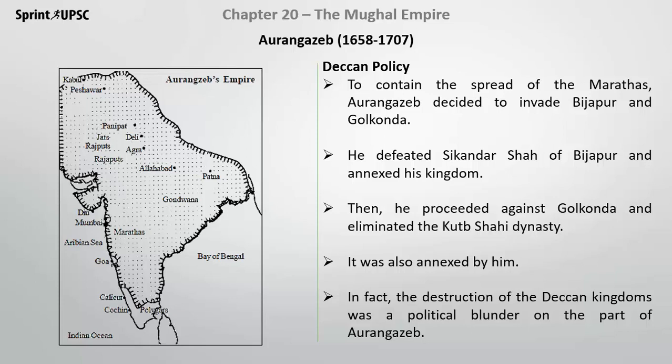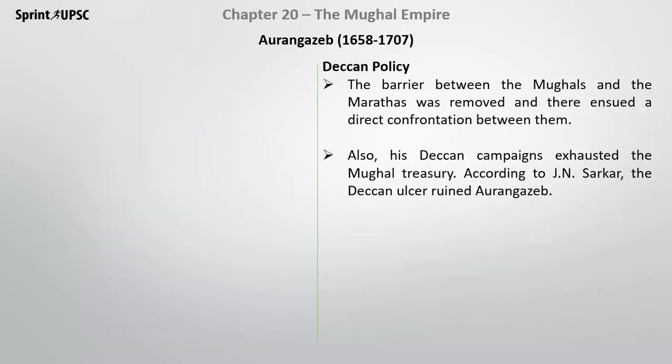He proceeded against Golconda, eliminated the Qutb Shahi dynasty, and annexed it. In fact, the destruction of the Deccan kingdoms was a political blunder on the part of Aurangzeb. As a result, the barrier between the Mughals and Marathas was removed and a direct confrontation ensued between them.